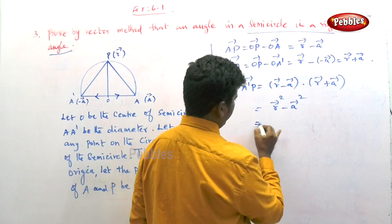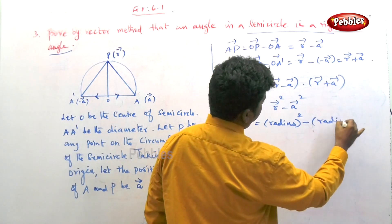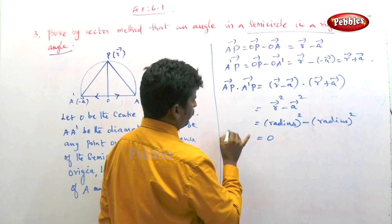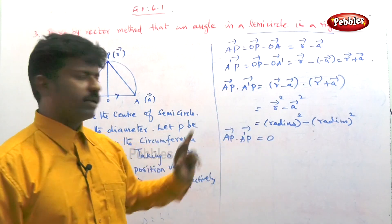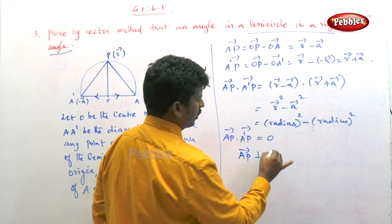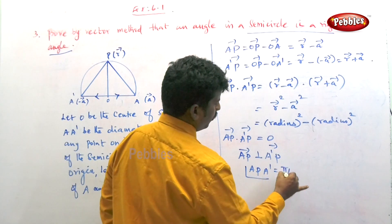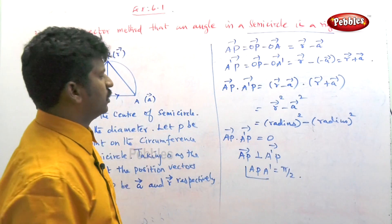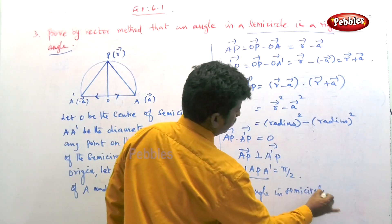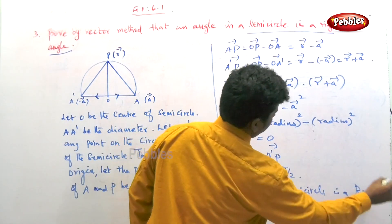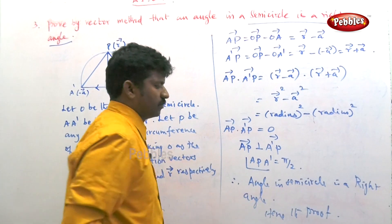Since the dot product is zero, vector AP is perpendicular to vector A'P. This means the angle APА' equals π by 2, which is 90 degrees. Therefore, the angle in a semicircle is a right angle. Hence proved.